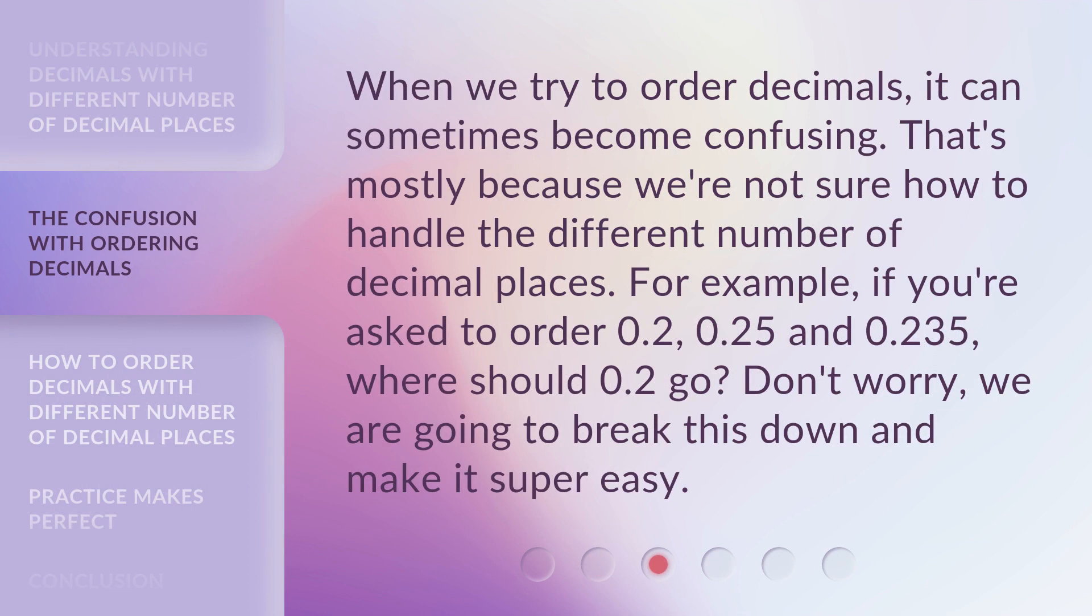When we try to order decimals, it can sometimes become confusing. That's mostly because we're not sure how to handle the different number of decimal places. For example, if you're asked to order 0.2, 0.25, and 0.235, where should 0.2 go? Don't worry, we are going to break this down and make it super easy.